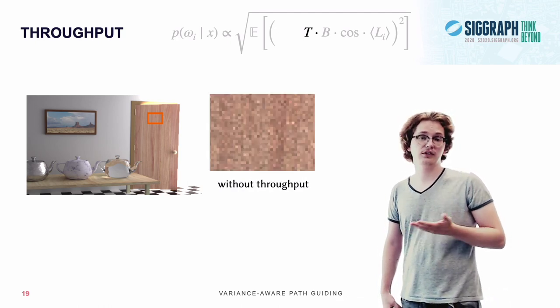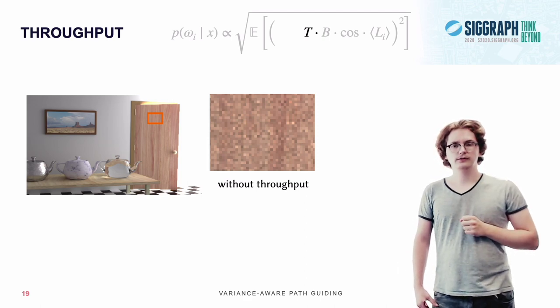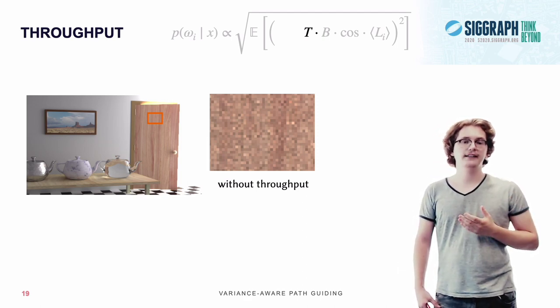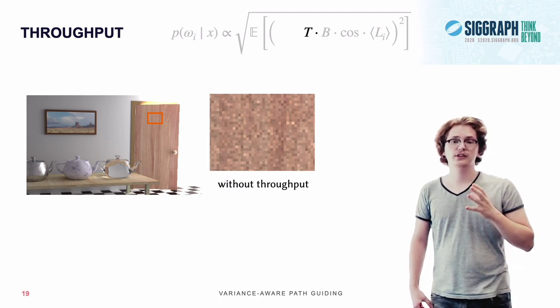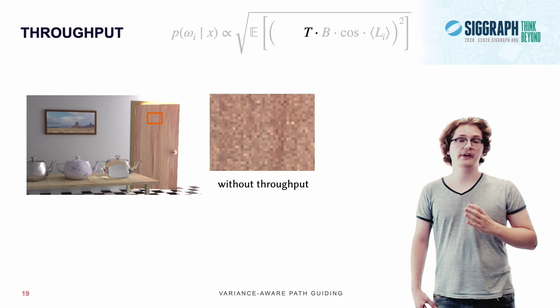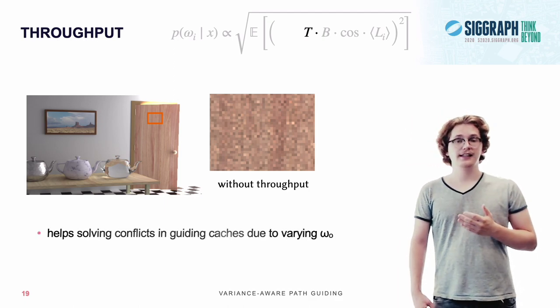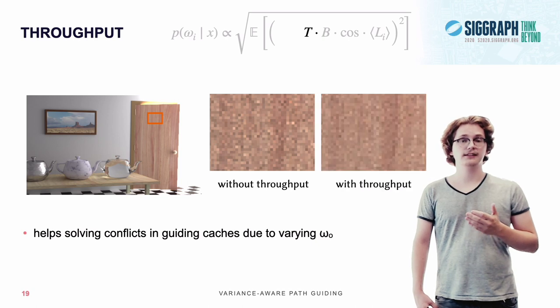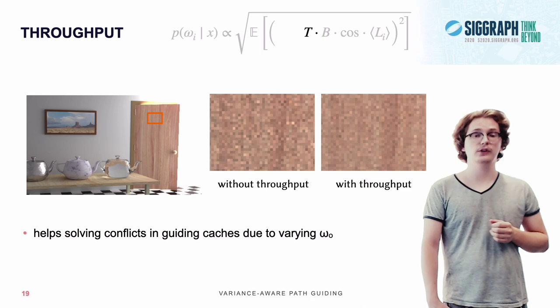But by taking the throughput into account, we're actually telling path guiding that it shouldn't just focus on whatever is brightest, but it also should focus on what's important to our image. In this case, the front side of the door, which leaves us with an image that's less noisy, and over its entire image, it's around twice as fast at converging.